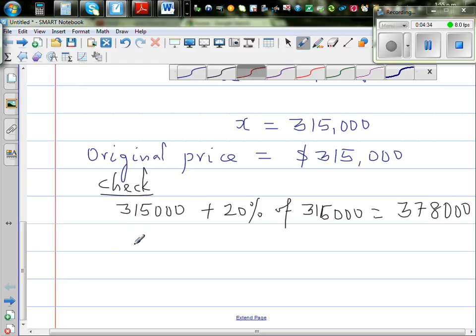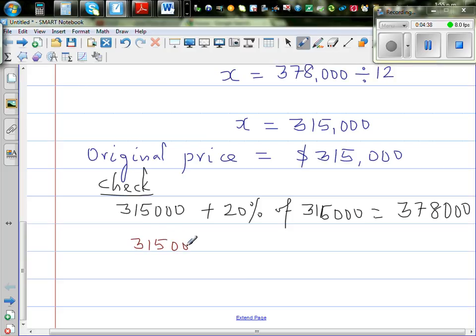So $315,000 plus 20% of $315,000. 10% of $315,000 is $31,500. You just remove a zero or divide by 10. So 20% would be double of this.